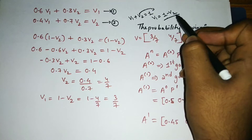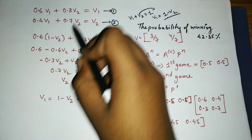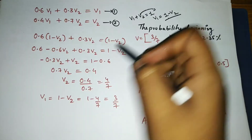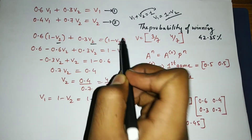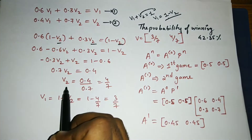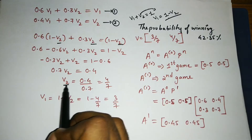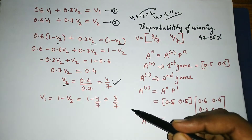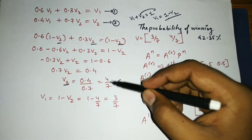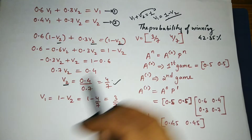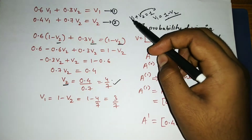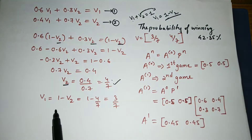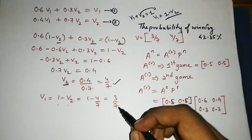Replacing v1 with (1 − v2) in the first equation and solving, I get v2 = 4/7. Since v1 + v2 = 1, v1 = 1 − 4/7 = 3/7.